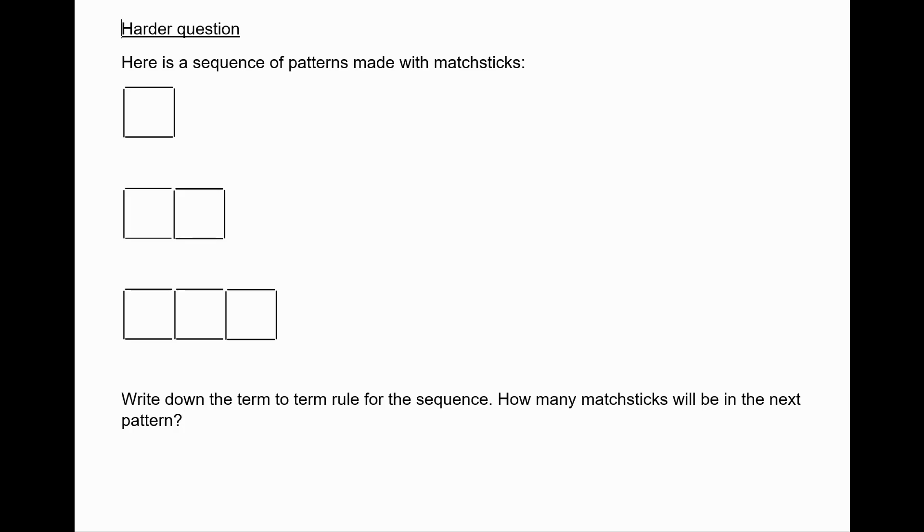Here is the answer. We know that in the first pattern we have 4 matchsticks. In the second, we have 1, 2, 3, 4, 5, 6, 7. In the third, we have 1, 2, 3, 4, 5, 6, 7, 8, 9, 10. So it seems as though we're adding 3 every time. So we can say that the term-to-term rule is plus 3. And in the next pattern, therefore, we will have 13 matchsticks.